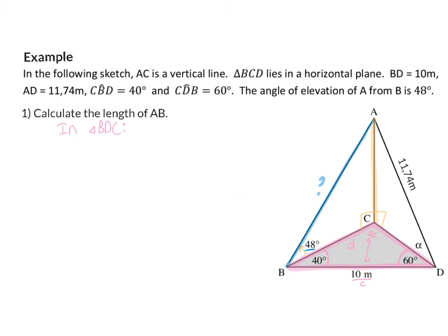So when we now use our sin rule, I'm going to start off with what I want to calculate. Side D over sin of angle D, and that will be equal to side C over sin of angle C. And now we can substitute in what we know.